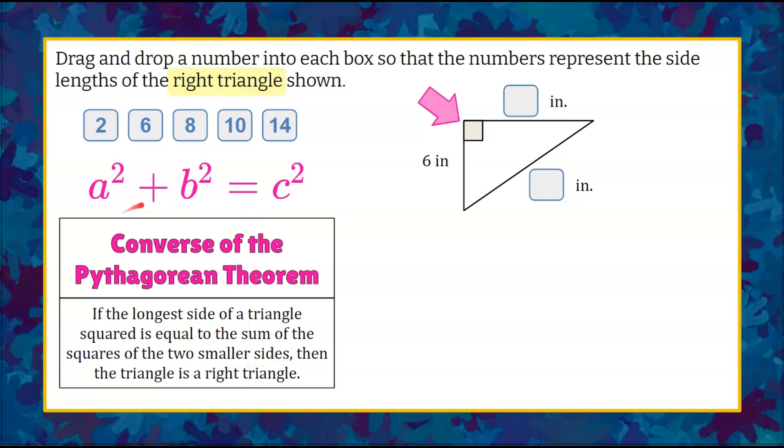So we have A squared plus B squared equals C squared, and we're going to identify that our C, our longest side, is the side opposite the right angle, our hypotenuse, and the other two sides that form the right angle are the legs, A and B, and they are interchangeable.